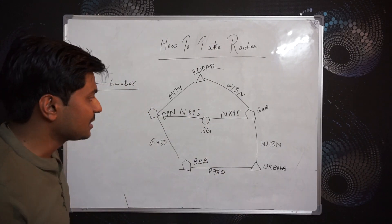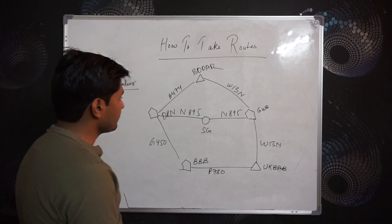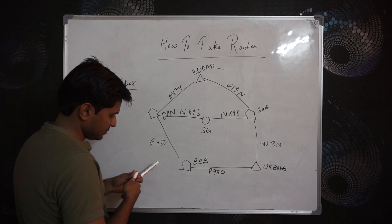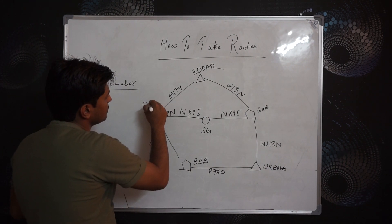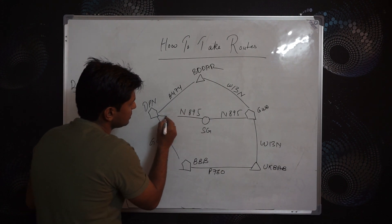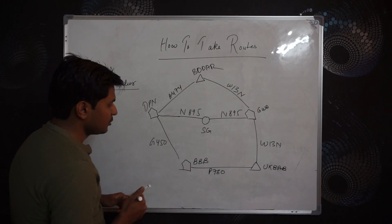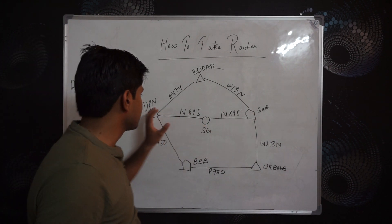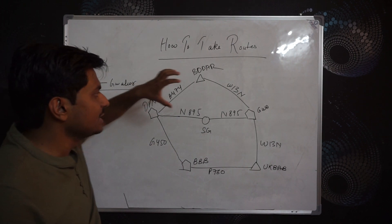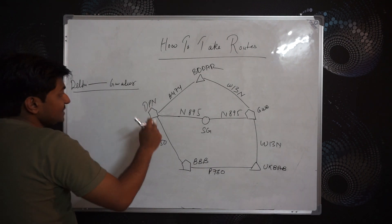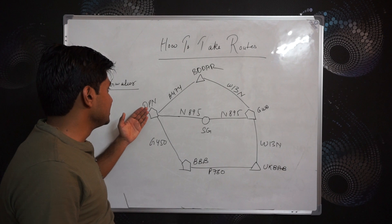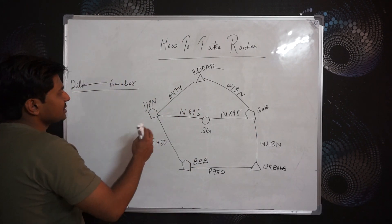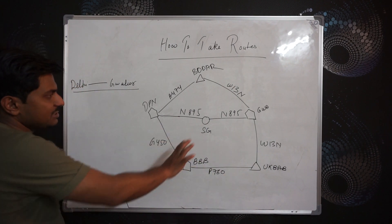I've drawn a kind of small map showing the routes. These are Delta Papa November, Bravo Bravo Bravo, and the routes are written here. If I'm going from Delhi to Gwalior, Delta Papa November is for Delhi and Whiskey Alpha is for Gwalior. In the coming time you'll need to learn the location indicators, but for now we keep things simple.